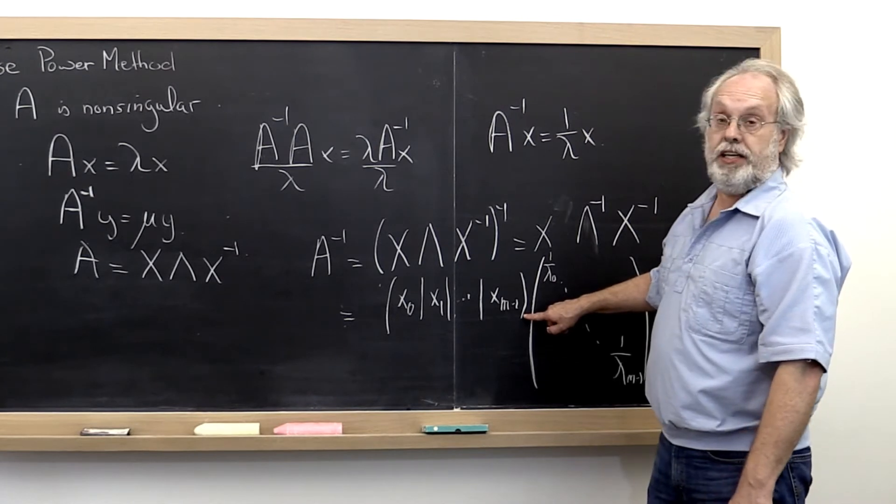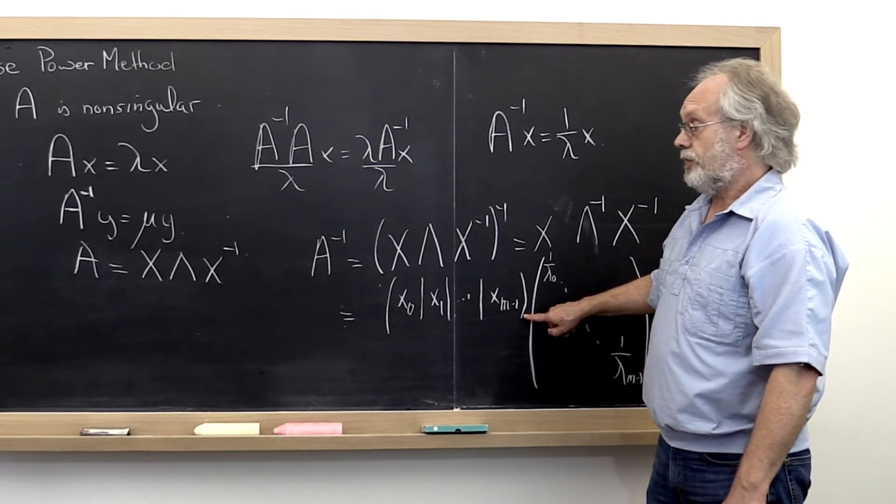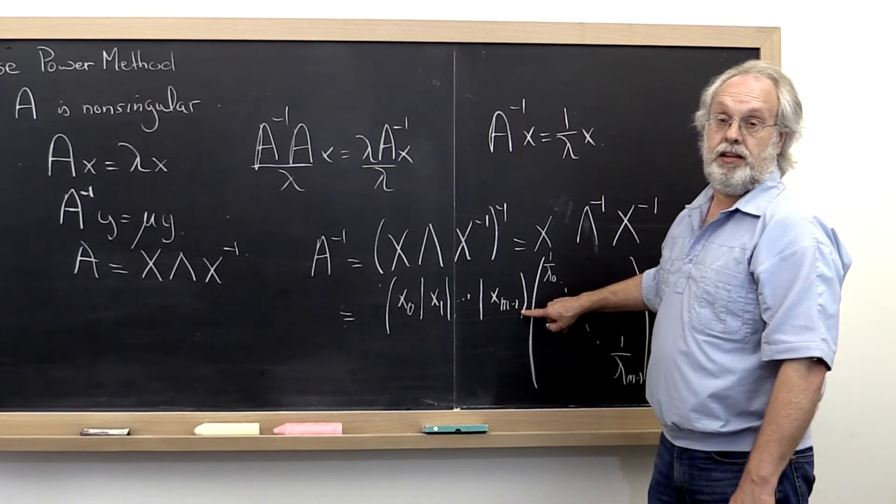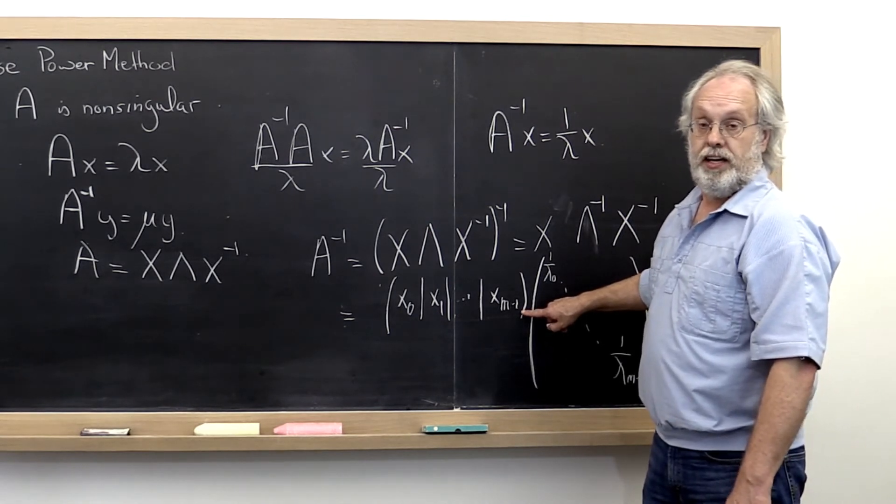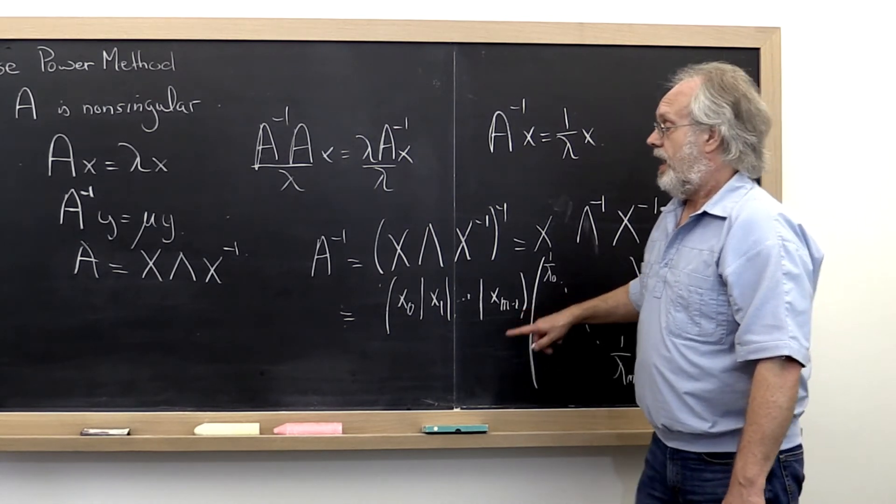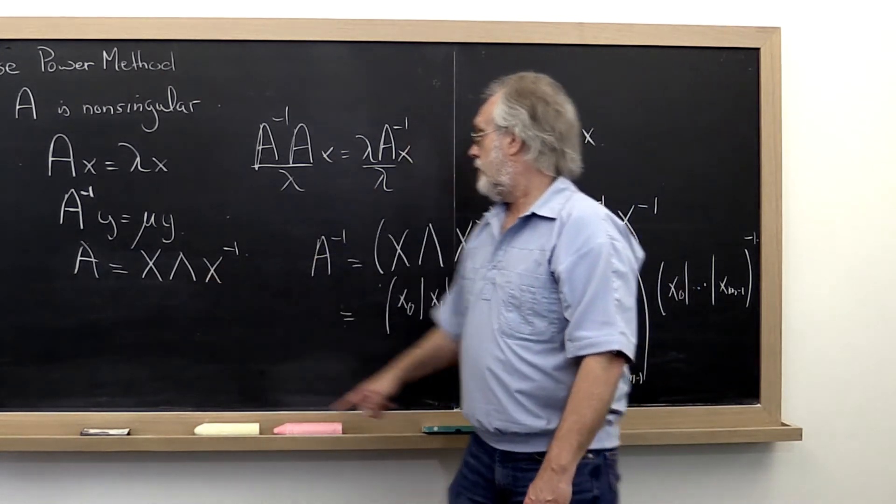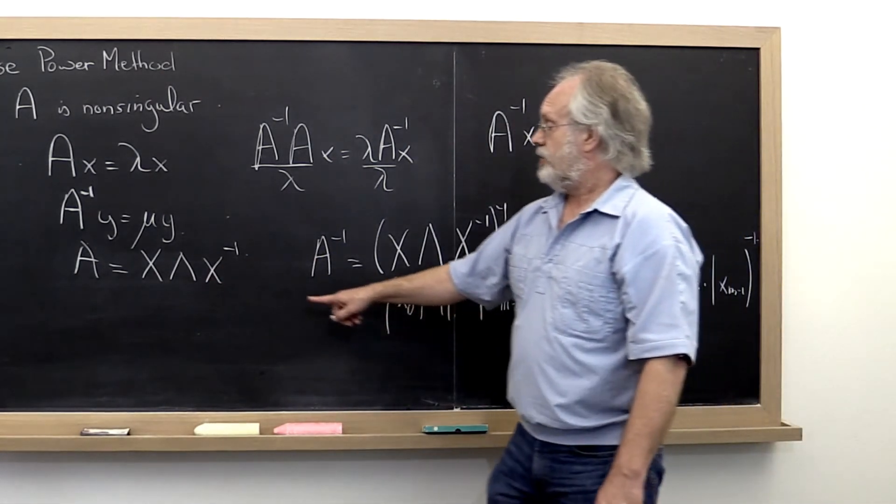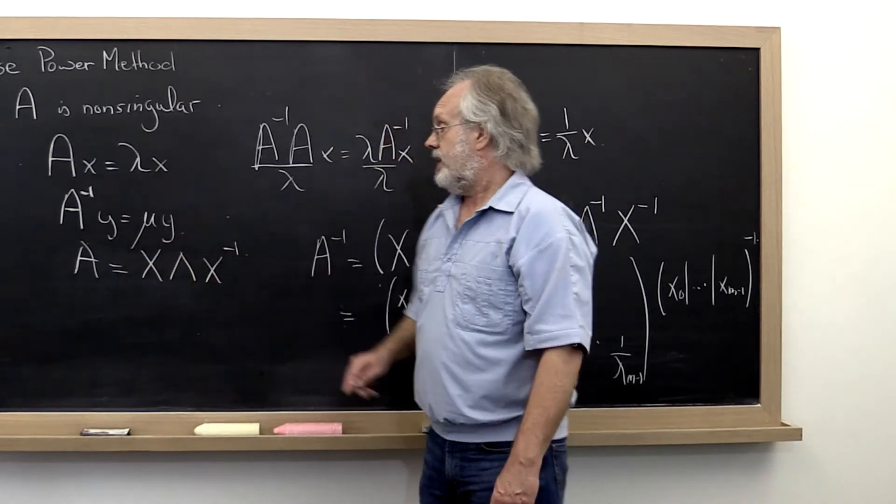If we have M linearly independent eigenvectors for A, then we have M linearly independent eigenvectors for A inverse. And the diagonal that shows up over here is the inverse of the diagonal that we got when we diagonalized A.